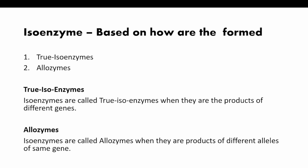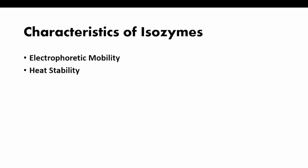An example of allozymes is glucose-6-phosphate dehydrogenase, of which more than 400 distinct forms have been identified. To summarize: for true isoenzymes, all forms are present in an individual, whereas for allozymes, only one form will be present in an individual.